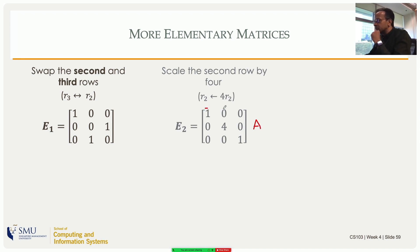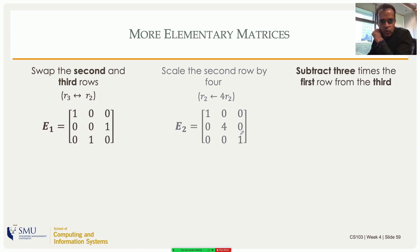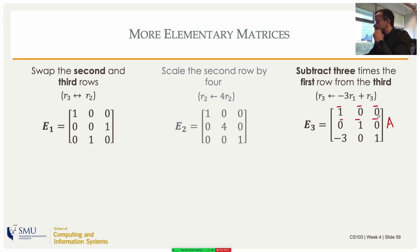Multiplying the scaling elementary matrix by A: the first row stays the same, the second row becomes zero of the first, four times the second, zero of the third — so the second row gets scaled by four. The third row stays the same. That is the implementation of scaling.